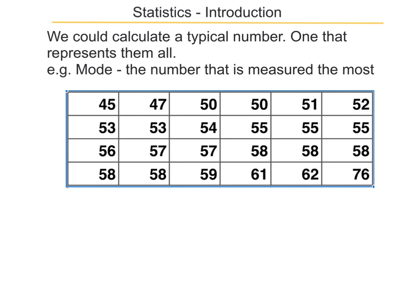Another way of getting a typical number is to look for the one that turns up the most. For this data, there are five 58s, so we would say the mode is 58. That's the number that's measured the most.